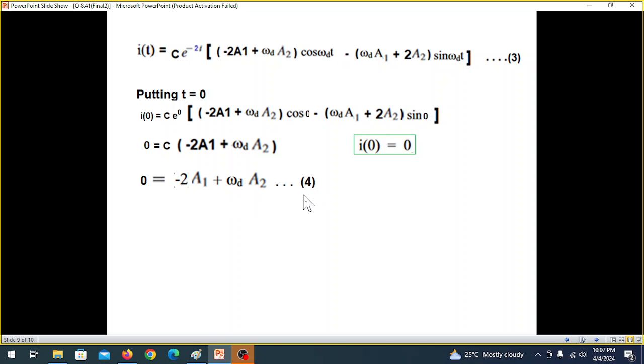But first of all, let's find A2 from here. So from here, A2 will be 2A over omega d. A we know is 3.333. Omega d is 4.583. And the answer is minus 1.454. That should be a minus here. Anyway, so A2 we have found.